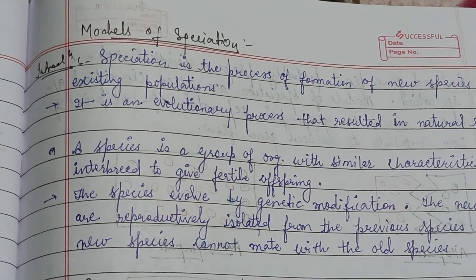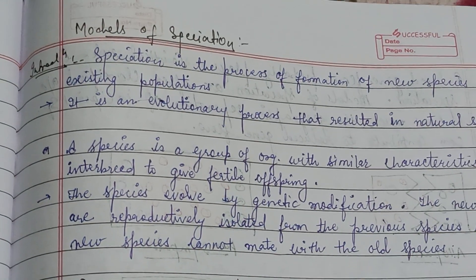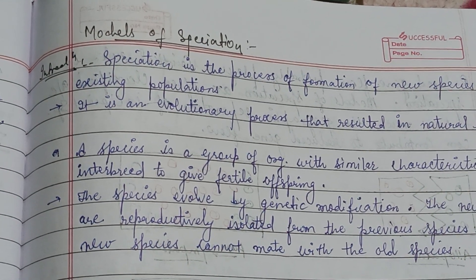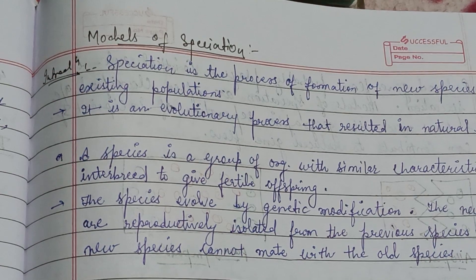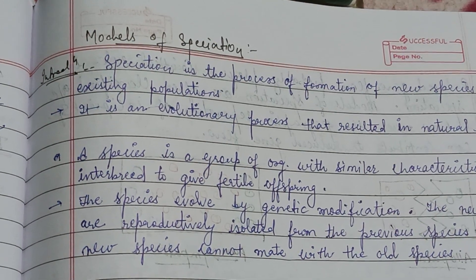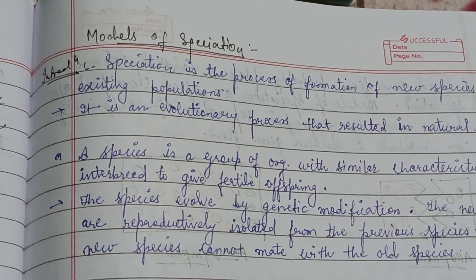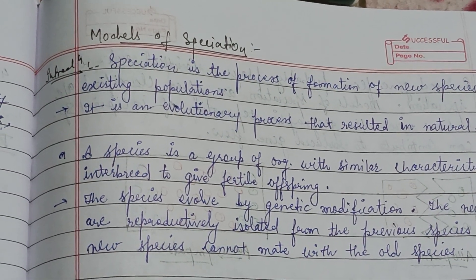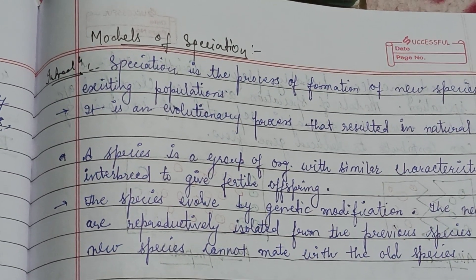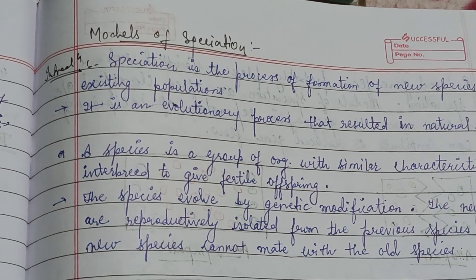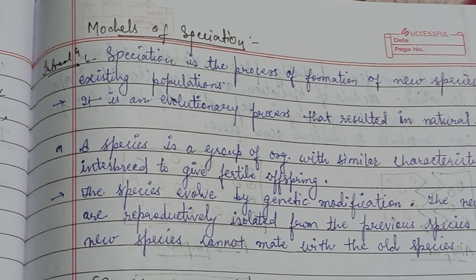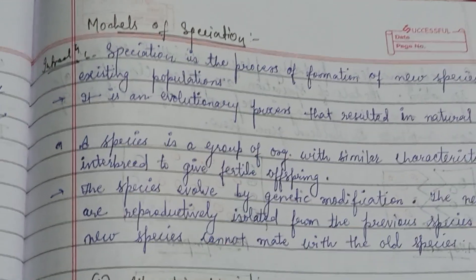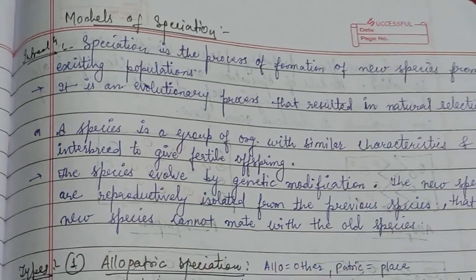Hello everyone. Today's topic is models of speciation. Through this video we are going to touch on allopatric speciation, sympatric, parapatric, and peripatric speciation, which are the types of speciation, and factors affecting speciation.